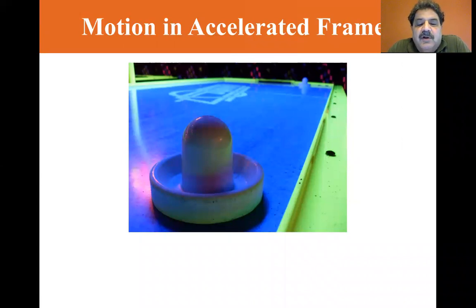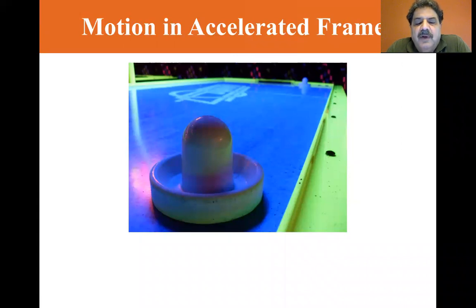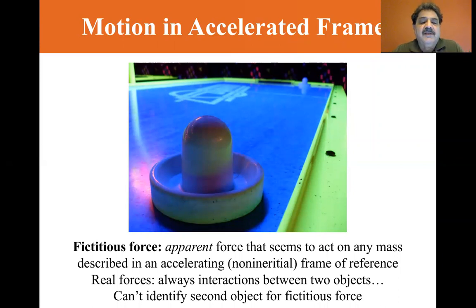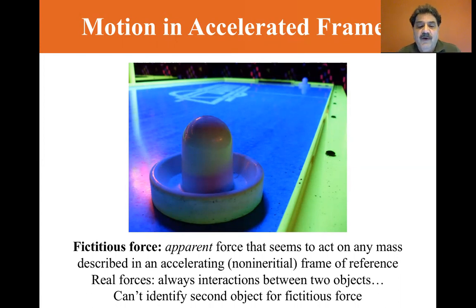The apparent force is called a fictitious force. It's not a real force and it is due only to observations made in an accelerated reference frame. A fictitious force is an apparent force that seems to act on any mass described in an accelerating non-inertial frame of reference.